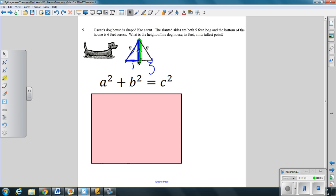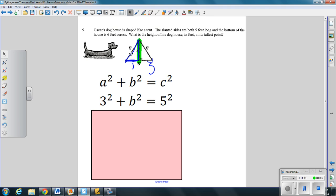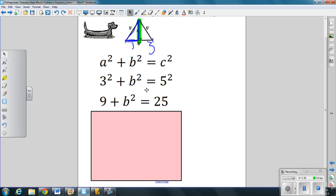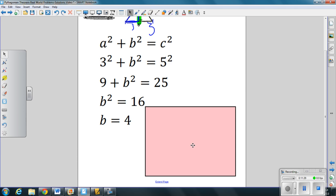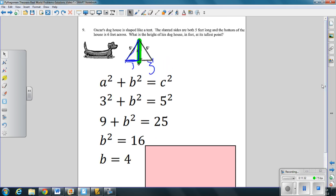I know a base of 3. I know another leg of x. And I know the hypotenuse is 5. So we get 3 squared plus b squared equals 5 squared. Leg, leg, hypotenuse. I know one leg and the hypotenuse. So 3 squared is 9. 5 squared is 25. We subtract 9 to both sides to get b squared is equal 16. And to undo or inverse of squaring is square rooting. We get b equals 4. So that means the tallest part of this doghouse is 4 feet in height. Any questions, please ask.